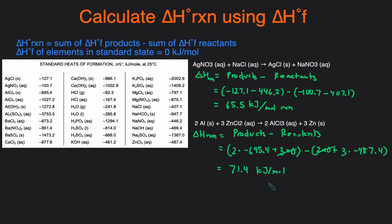That's how you can calculate the delta H of the reaction using heat of formation. You just do products minus reactants. The hard part, or the tedious part, is looking up the values in the table and then making sure you enter the numbers into the calculator correctly.